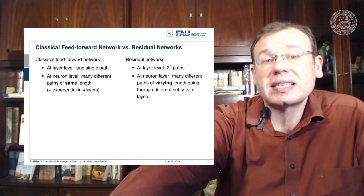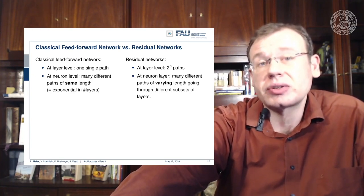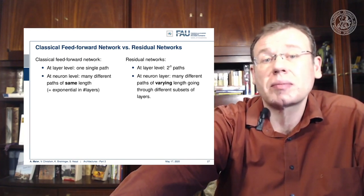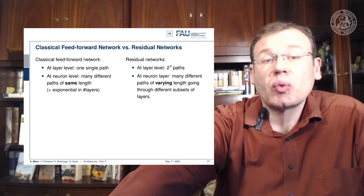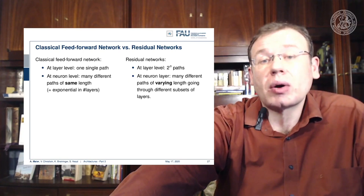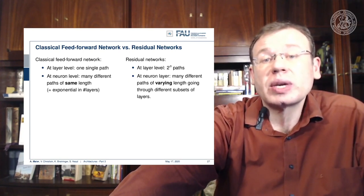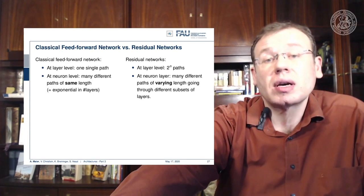In a classical feedforward network, we can change the representation in every single layer through matrix multiplication, which can convert inputs into a completely different domain. In the classical feedforward network we have one single path and, at neuron level, many different paths of the same length. In residual networks, we get 2 to the power of n paths, and at neuron level we get many different paths of varying length going through different subsets of layers — a very strong ensemble constructed this way.